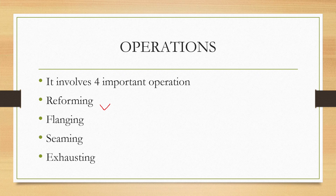There are four types of processes involved in canning: reforming, flanging, seaming, and exhausting. Let's get into detail about each one.